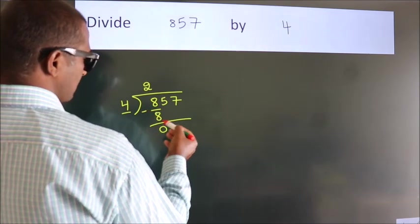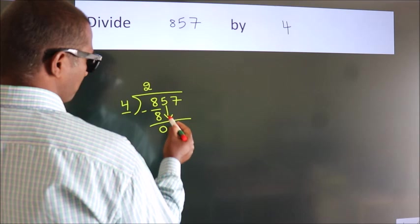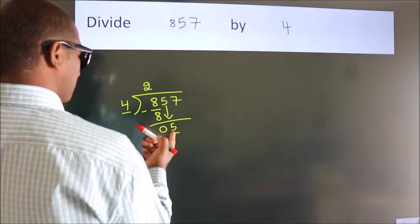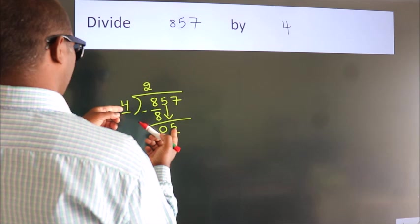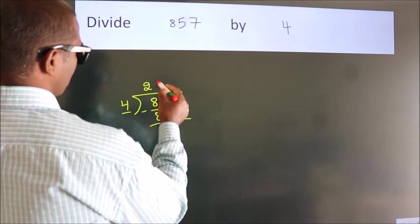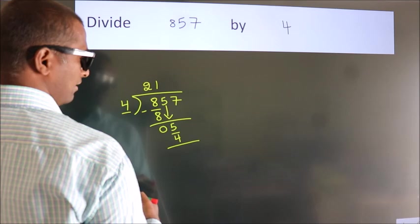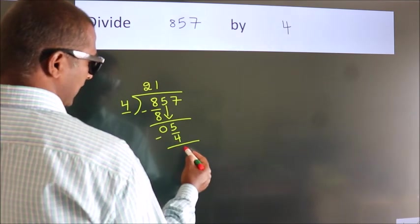After this, bring down the beside number. So 5 down, so 5. A number close to 5 in 4 table is 4 ones, 4. Now we subtract, we get 1.